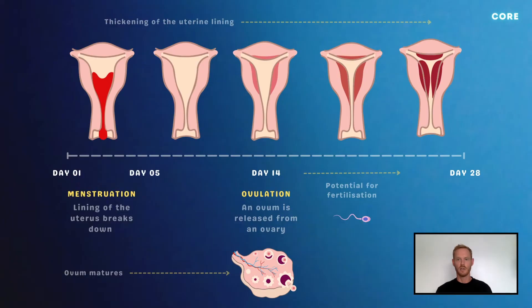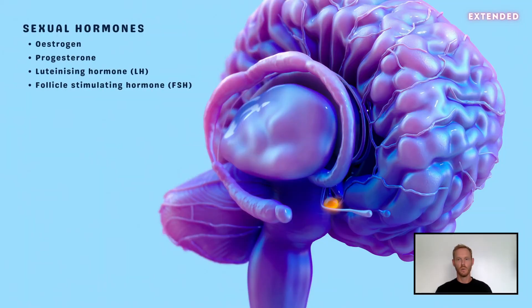Following menstruation, the uterine lining begins to regenerate and another ovum starts to mature. That's everything for core, but for extended, you also need to know about the hormones that control the menstrual cycle and pregnancy.